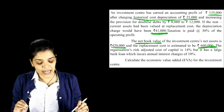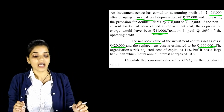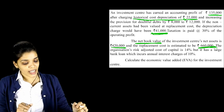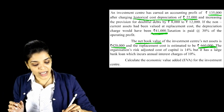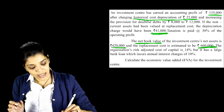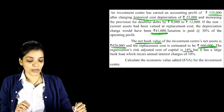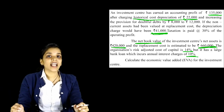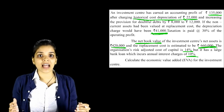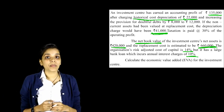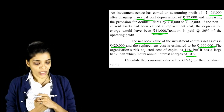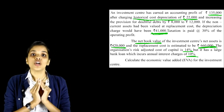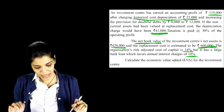The organization's risk-adjusted cost of capital is 14%, but it has a large bank loan which incurs annual interest charges of 10%. The WACC of the whole organization — the risk-adjusted cost of capital — is 14%, and the bank loan charge is 10%, meaning the cost of debt is 10%. But we have no other information — the amount, etc. So we also cannot tax-adjust the interest, because we cannot calculate the interest amount. And since we are given the whole company's cost of capital at 14%, we don't even need the cost of debt.